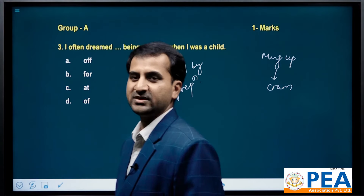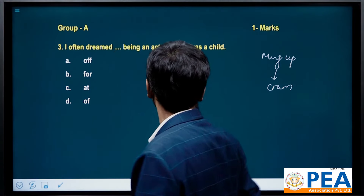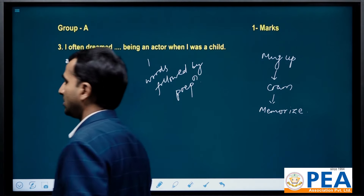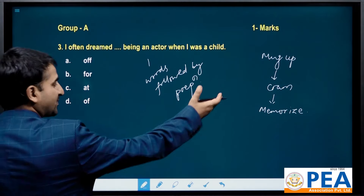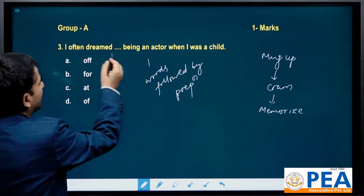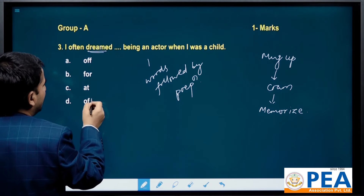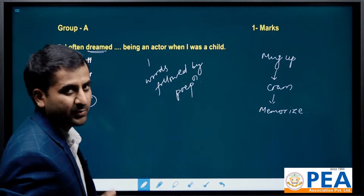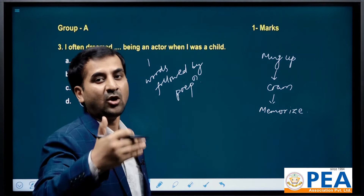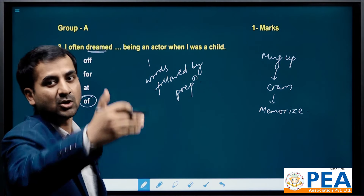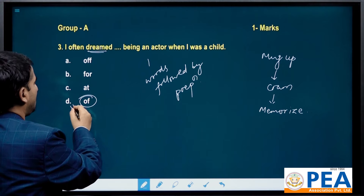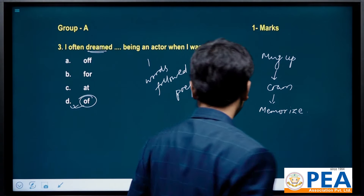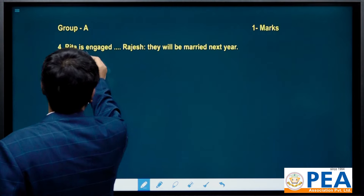See here: 'dream of' — it takes 'of'. If you want to become a doctor, you are dreaming of becoming a doctor. So the answer uses 'of'.